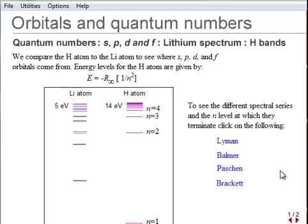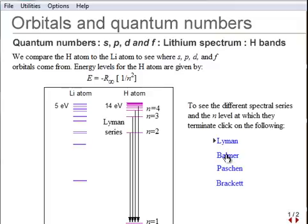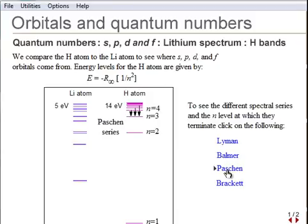Compare hydrogen with one electron and lithium with three electrons. Note the energy levels are different for hydrogen and lithium. There appears to be extra energy levels for lithium.